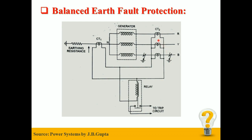Under normal working condition, the current flowing in the secondaries of the line CTs sums to zero. Also, the current flowing in the neutral CT is also zero, and so the relay remains de-energized. But when an earth fault occurs within the protection zone, the fault current flows through the primary of the neutral CT, and the corresponding secondary current flows through the relay operating coil. Therefore, the relay gets energized and sends a trip signal to the circuit breaker in order to protect the stator phase winding of the three-phase generator against the earth fault.